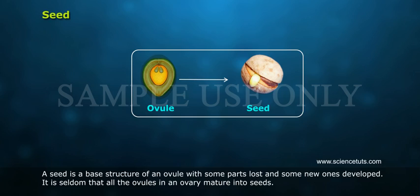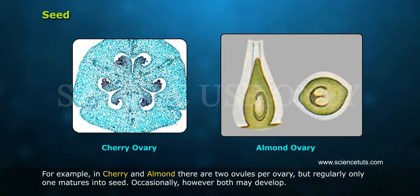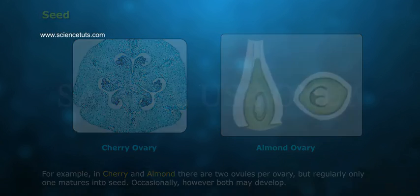It is seldom that all the ovules in an ovary mature into seeds. For example, in cherry and almond there are two ovules per ovary, but regularly only one matures into a seed. Occasionally, however, both may develop.